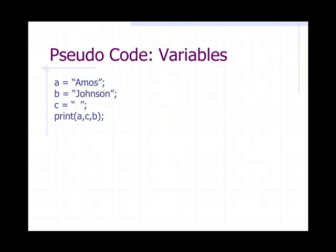Let's look at this. This says in quotation marks Amos is assigned to A, in quotation marks Johnson is assigned to B, and quotation marks space is assigned to C.